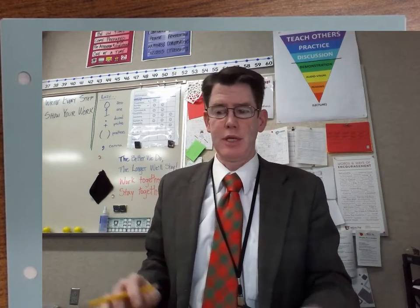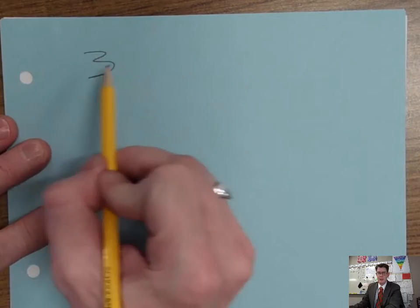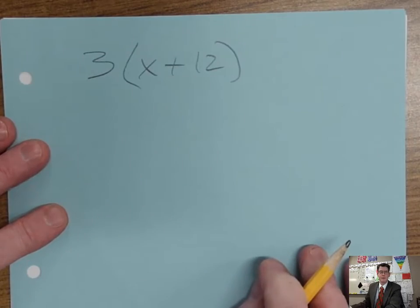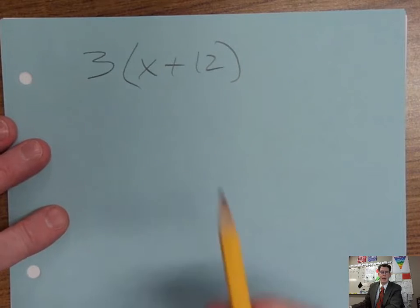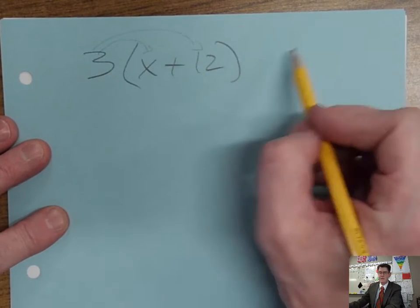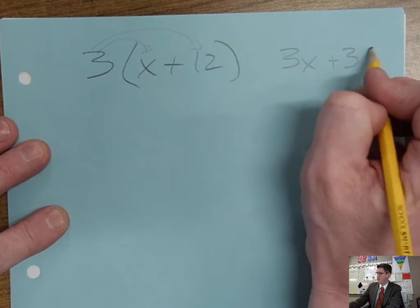So, for example, get me out of the way here. We've done problems such as this: three times x plus 12. And we can expand by distributing the three to each of the items, which gives us 3x plus 36.